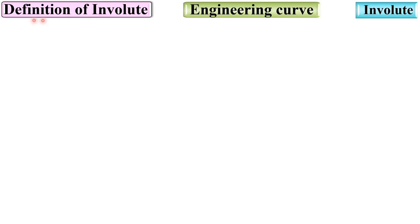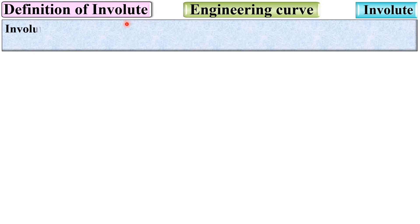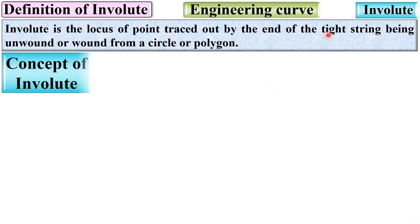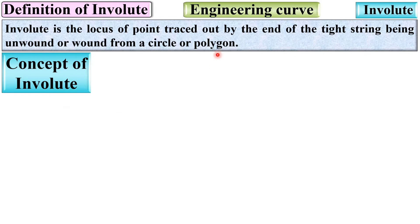First of all, let us see the definition of the involute. Involute is the locus of a point traced out by the end of a tight string being unwound or wound from a circle or polygon. If the string is wound or unwound on a circle, it is called the involute of circle. If the string is wound or unwound on a polygon, it is called the involute of polygon.